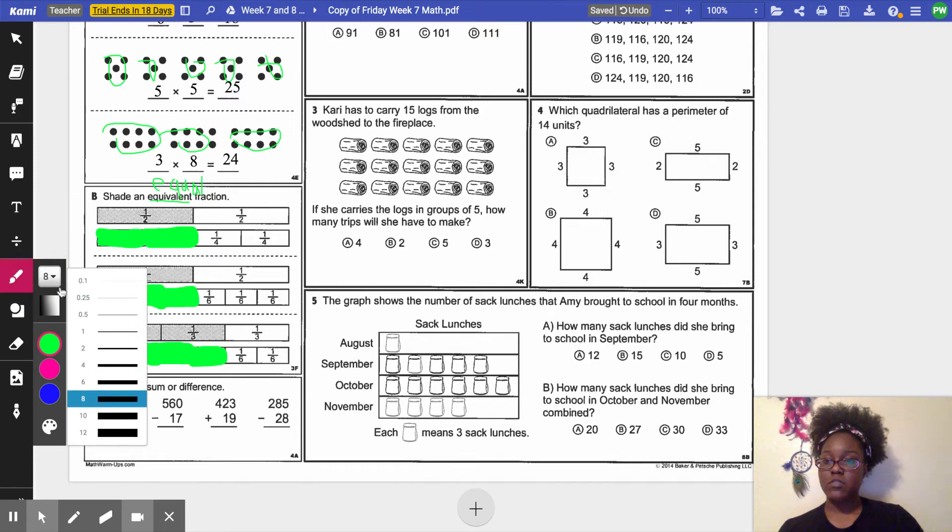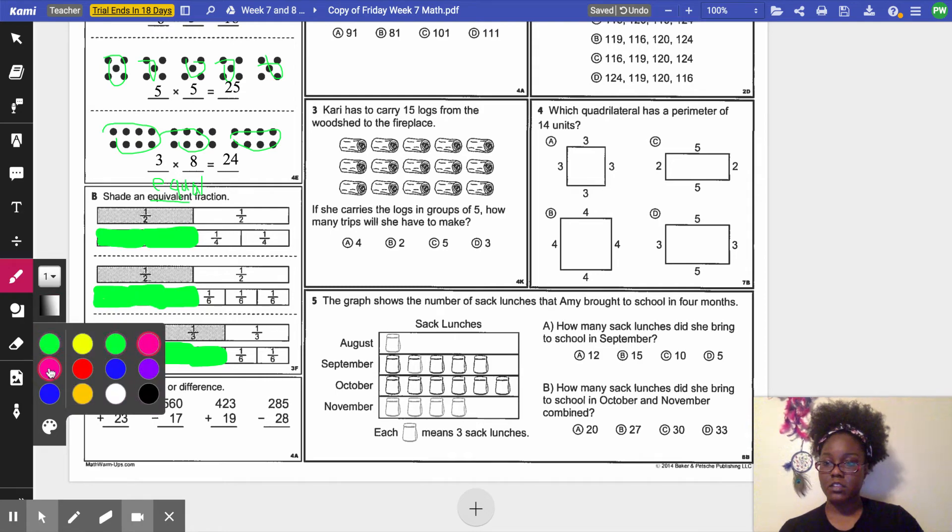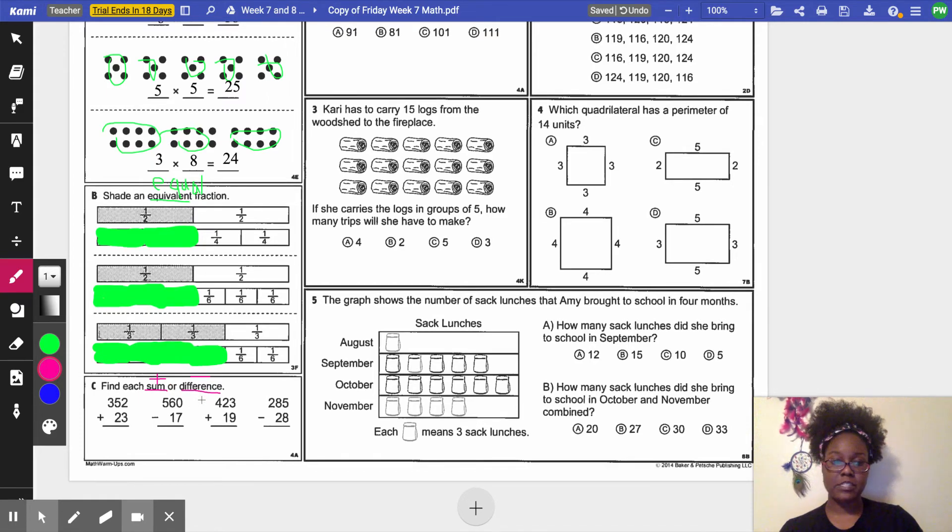All right, I'm moving on to letter C. Find each sum. Sum means to add as the answer to an addition problem. Or difference. Difference means we're going to subtract. That's the answer to a subtraction problem. We're going to start in our ones place on all of the addition or subtraction problems. 2 plus 3 gives me 5. 5 plus 2 gives me 7. And 3 plus nothing gives me 3. So my sum is 375.